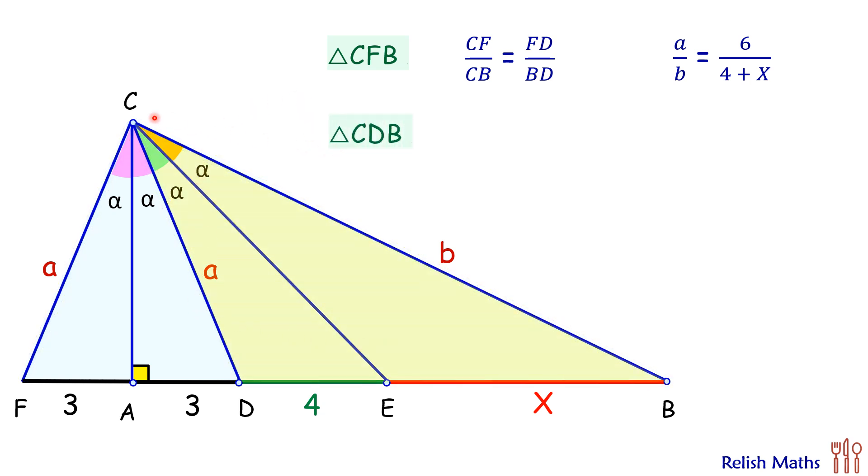Now in the same way, if we look at the triangle CDB, that is this yellow shaded triangle, in this triangle CE is angular bisector, and thus the ratio of sides, that is CD upon CB, will be same as DE upon EB. So putting the values we get a upon b is 4 upon x.